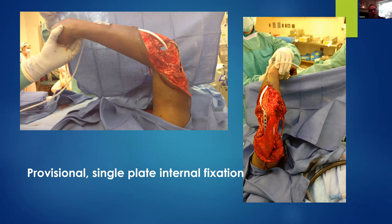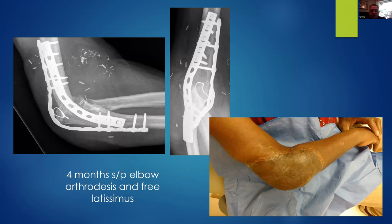In that case, I opted to fuse — the only elbow I've ever arthrodesed in my practice. I thought he was the right candidate, being an alcoholic. There was not much elbow left to speak of once the debridement was completed, nor a soft tissue envelope. An acute elbow arthrodesis was completed, and then two days later we converted that to a free latissimus flap. He went on to successful union with only two surgeries.